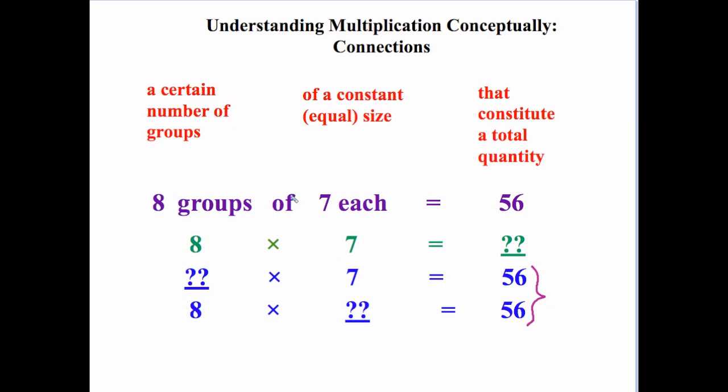Notice that in all of these scenarios, whether you're thinking of it as multiplication or if you're thinking of it as division, notice that we still had the same three things involved. We had so many groups of an equal constant size and a total quantity. For multiplication, we were looking for the total. And for division, we knew the total and we were either looking for the number of groups or the size of the groups. Multiplication and division are very similar because in context at this level, it involves the same things. It involves a certain number of groups of a constant equal size that constitute a total quantity.